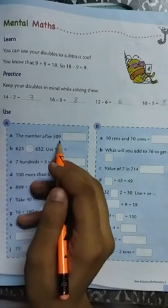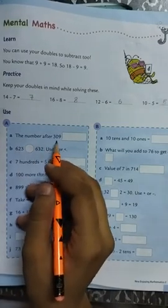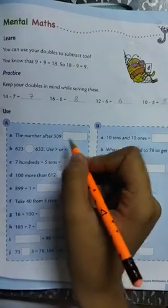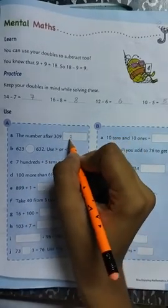The first question is the number after 309. Which number comes after 309? The number that comes after 309 is 310.